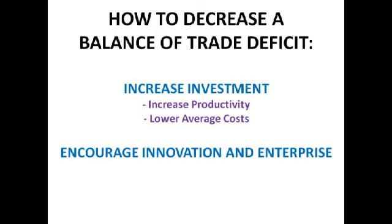So how can we decrease the balance of trade deficit? We could increase investment — if we increase investment into goods and services, we can increase our productivity and this will cause average costs to fall. So say a firm invested in more capital; the worker operating the machine can make 20 boxes an hour rather than 10. The amount they can produce per worker per period of time has increased, meaning lower average costs, which makes us more price competitive on the international market and increases our exports.